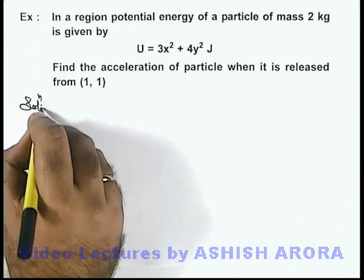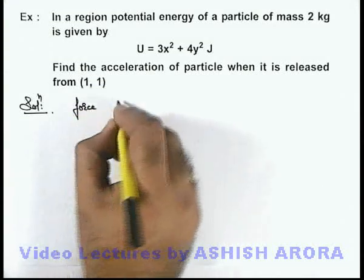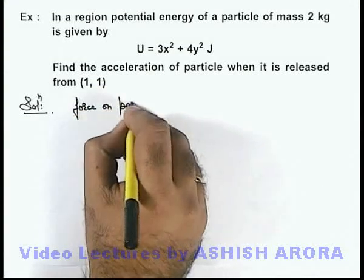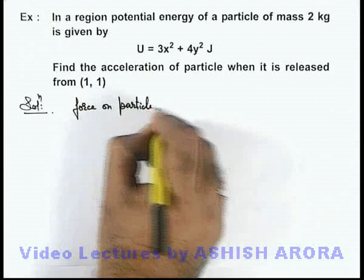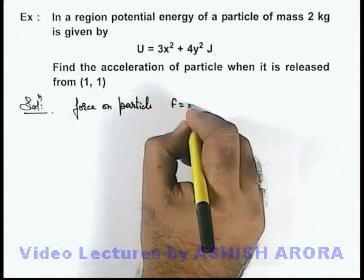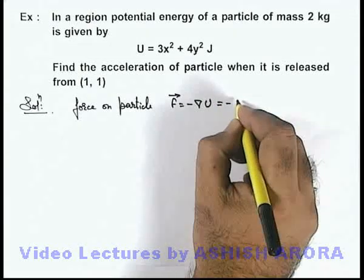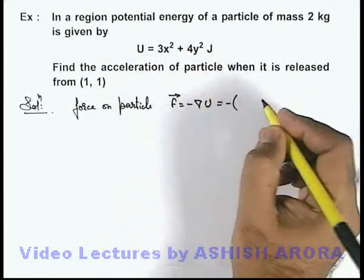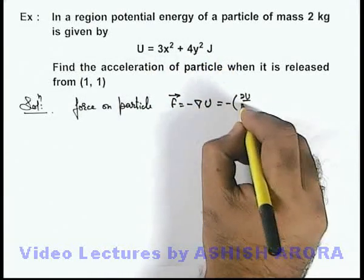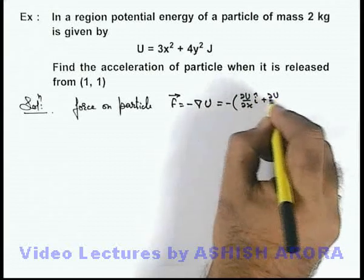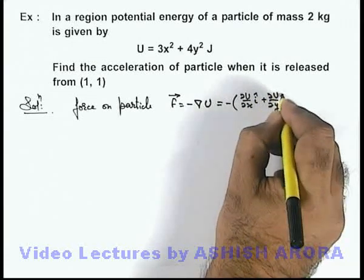Now in this problem, as we know that force on particle in a potential energy field is given as negative of gradient of potential energy, which can be written as minus (∂U/∂x î + ∂U/∂y ĵ), as it is a 2-dimensional field.